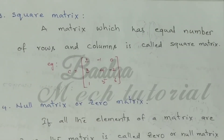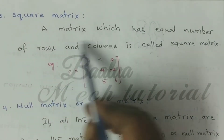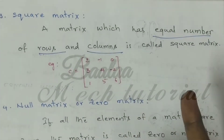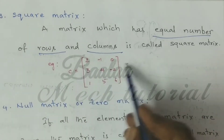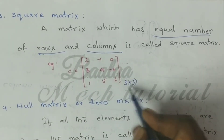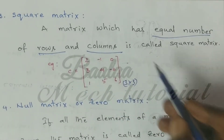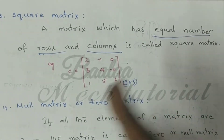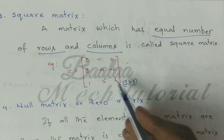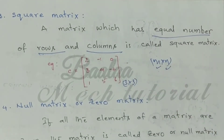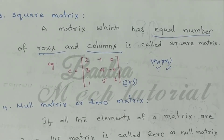Next one is square matrix. A square matrix is a matrix which has equal numbers of rows and columns. For example, a 3 by 3 matrix, 4 by 4 matrix, or 2 by 2 matrix. In an m by n matrix, m equals n for a square matrix.